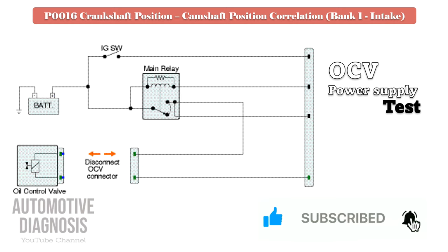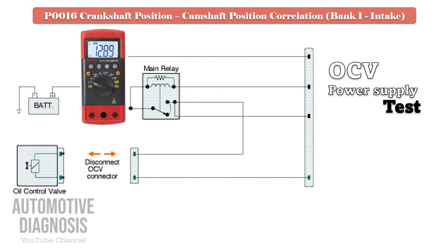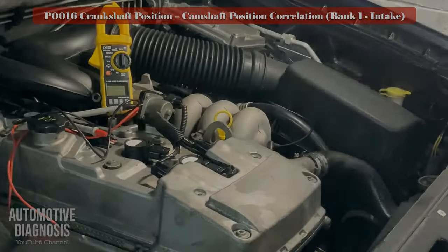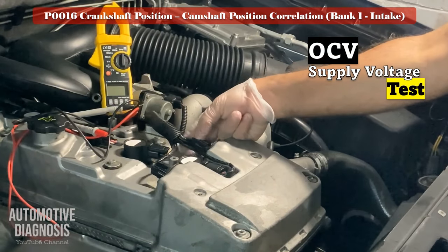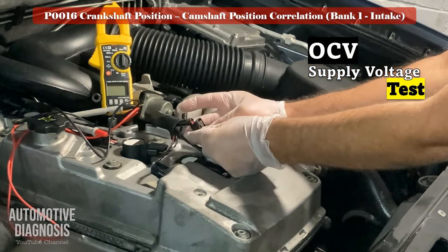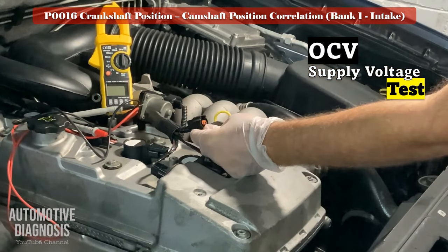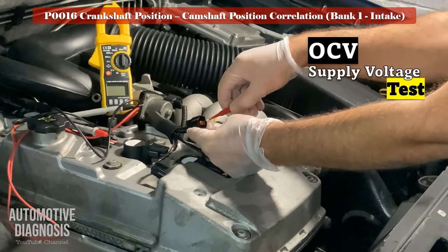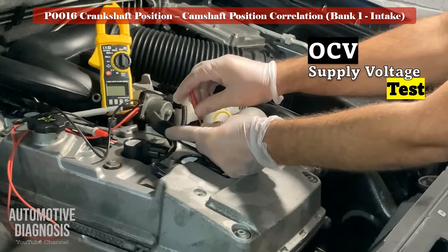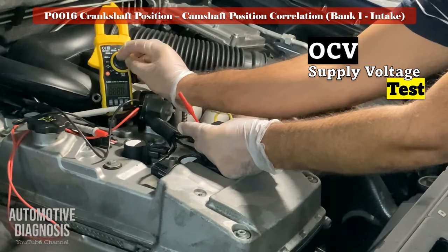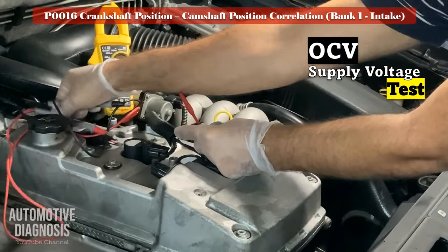For testing the OCV power supply voltage, turn the ignition on when the bank 1 intake OCV connector is disconnected. Then check the supply voltage using a multimeter on the relevant pin. In this test, you must measure battery voltage on the multimeter. Locate the intake OCV bank 1 and perform the power supply test procedure as shown here. If you have the correct voltage, go to the next step.